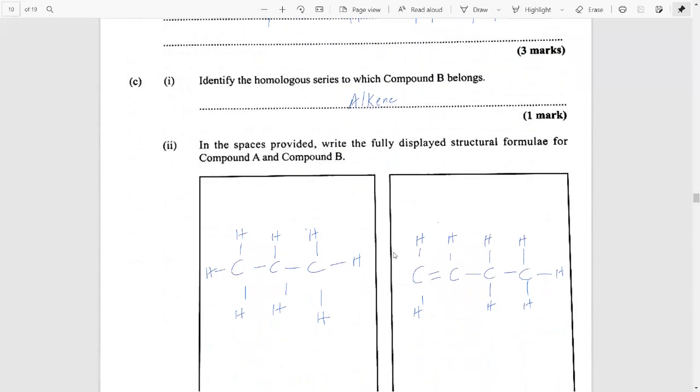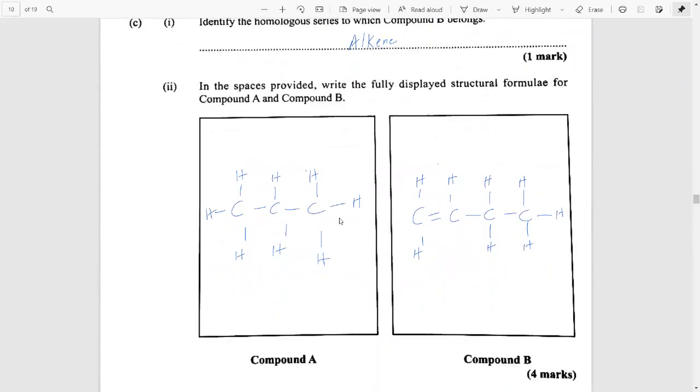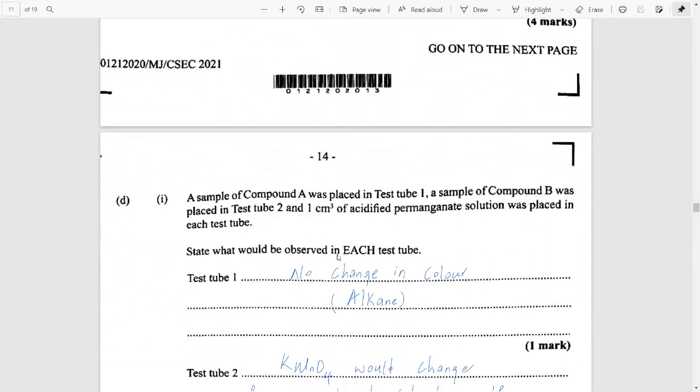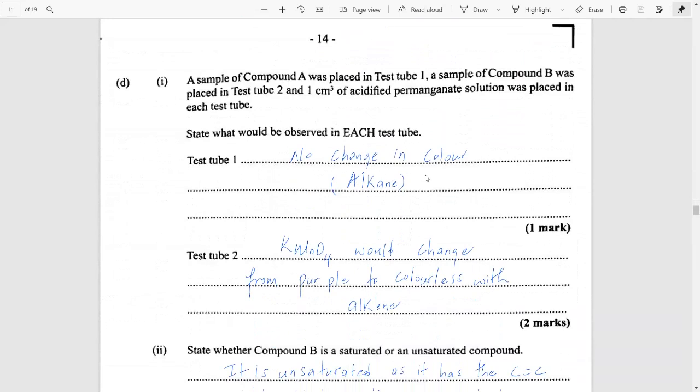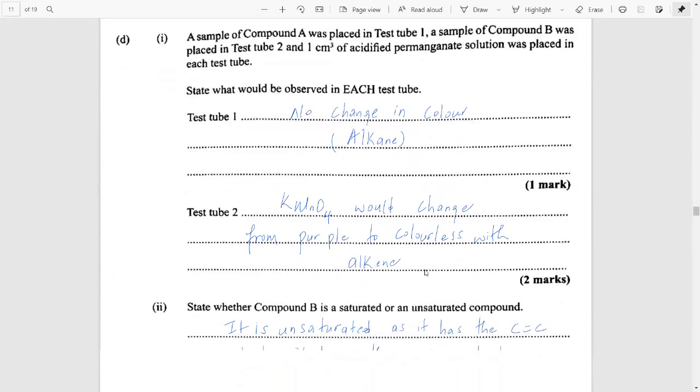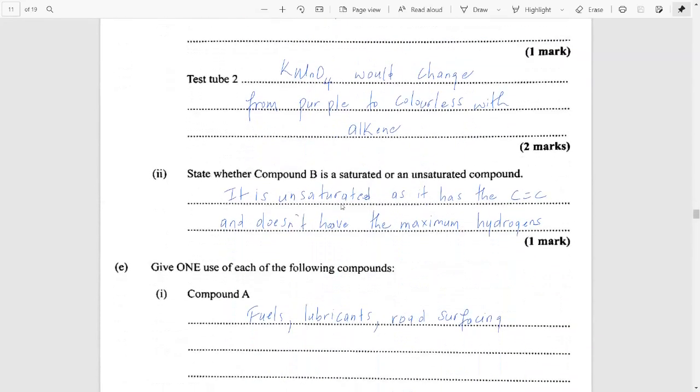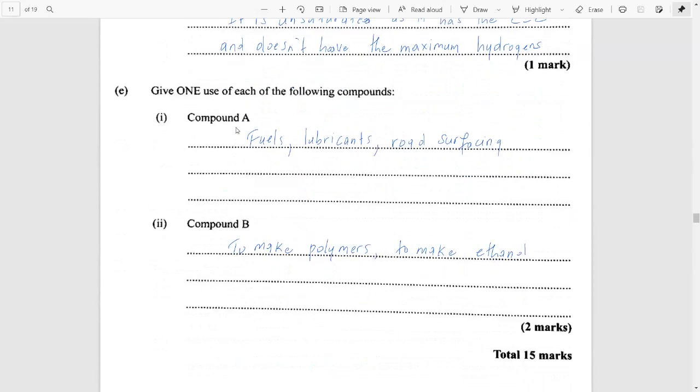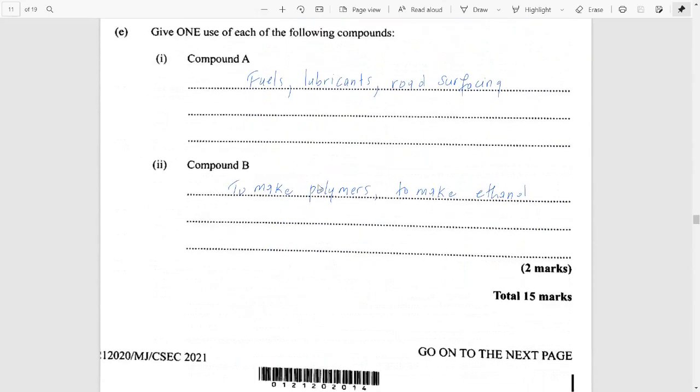Compound B was an alkene. And then you were asked to draw them. Compound A being the alkane, which is three carbons and eight hydrogens. And the alkene must have a double bond. So it had four carbons and eight hydrogens. And then you were asked to distinguish between the alkane and the alkene using permanganate. Only the alkene would have reacted in test tube number two, changing it from purple to colorless. Of course, the alkene was unsaturated, which represents compound B. It did not have the maximum hydrogens and it had the carbon-carbon double bond. And I hope you were able to give at least one use of an alkene, which would be represented by compound A and an alkene represented by compound B.